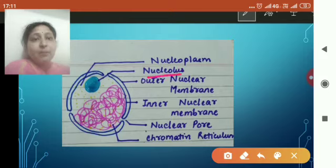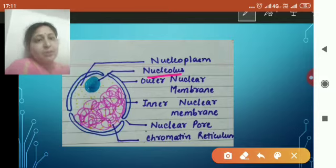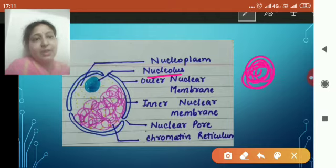Nucleolus is a membrane-less structure. Now membrane-less structure means if you are going to draw it, you are going to simply put a pencil like this and just going to draw it like this. You are not going to make any membrane outside it.